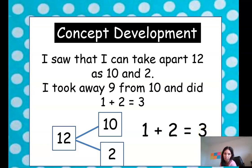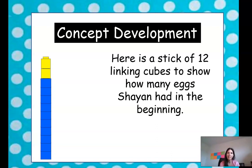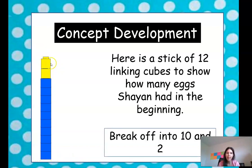Here is a stick of 12 linking cubes to show how many eggs Cheyenne had in the beginning. So Cheyenne had 12. So we have 12 right here. And we could break off 2 and have a group of 2 and a group of 10.